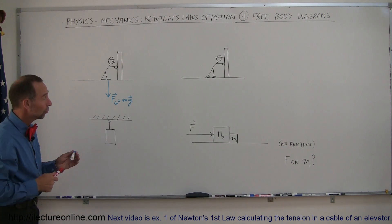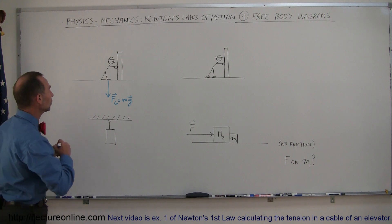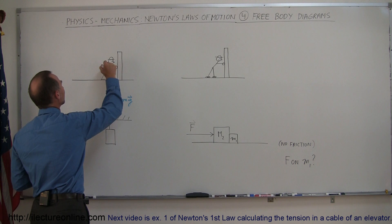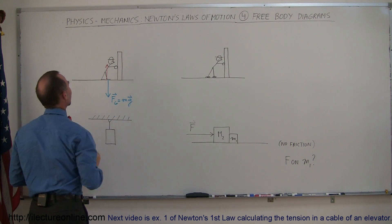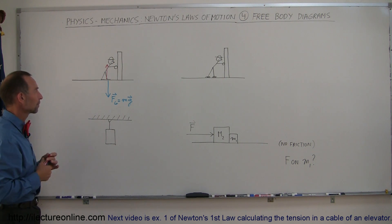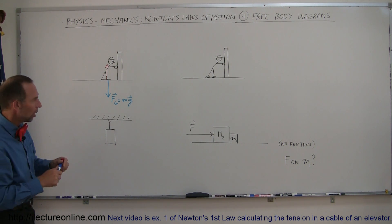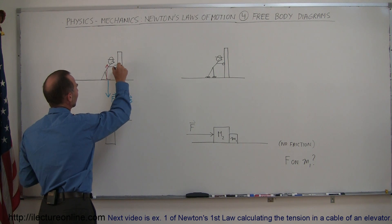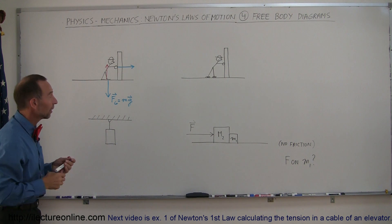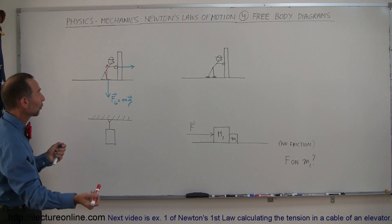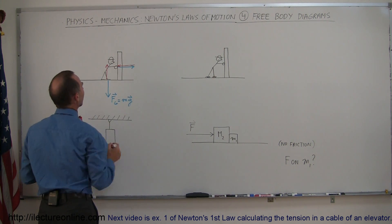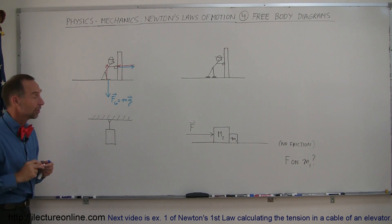Newton's third law tells us there's an equal and opposite reaction to that, so there's a force pushing back upward — that's the force of the ground pushing back on the person. That's the first force acting on the person. Secondly, the person is pushing against the wall in this direction, which means Newton's third law tells us we have an equal and opposite force of the wall pushing back on the person. That's the second force acting on the person.